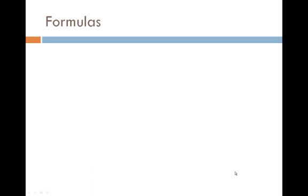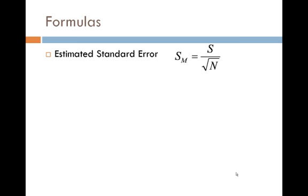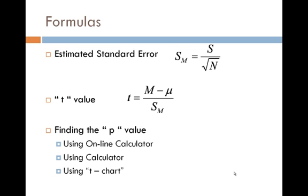All right, now the first thing we're going to look at are some formulas that you're really going to need for this section. These are the estimated standard error, the formula for the t-value, and also how you go about finding the p-value. You can do this either using an online calculator, using your normal calculator, or using something like a t-chart. Now let's look at each of these formulas and see what we have here.